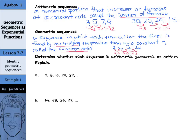Determine whether each sequence is arithmetic, geometric, or neither, and explain. 0, 8, 16, 24, 32. Let's check if there's a common difference first. From 0 to 8, I'm adding 8. From 8 to 16, still adding 8. From 16 to 24, still adding 8. And from 24 to 32, still adding 8. So this is an arithmetic sequence. For our explanation, the common difference is 8.